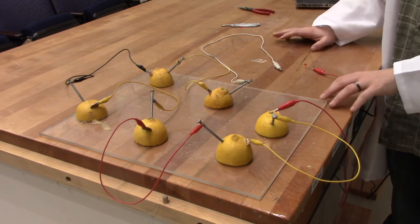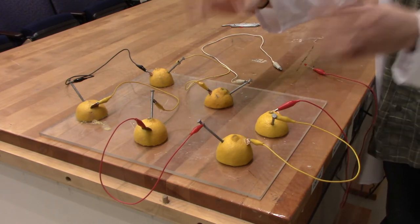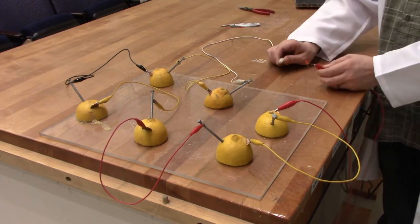The total voltage here is about 3 volts, and the resistance of the lemons is what's going to limit the current coming through this LED.